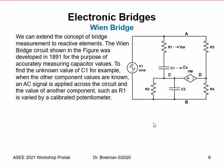We can extend this idea of bridge measurement to reactive elements. The Wien bridge circuit shown was developed in 1891 to accurately measure capacitor values. You can see two capacitors in this Wien bridge network — one would be unknown, designated C1, and we also have a variable resistor that we'll use to balance the bridge to determine the value of the unknown capacitor.